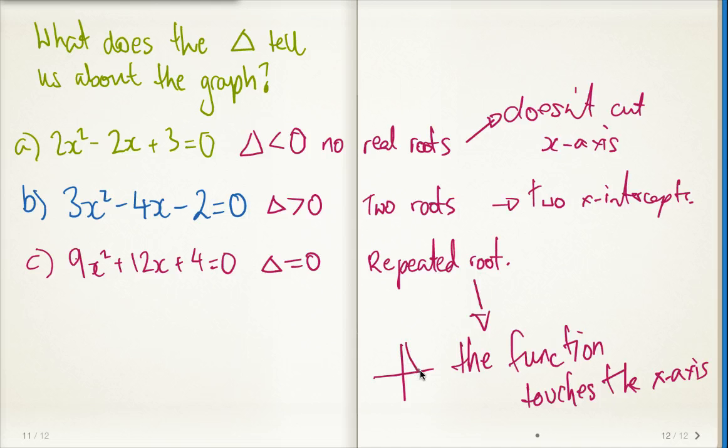Like that. 2 roots is going to look like this, or it could look like this. We've got 2 functions. And this one here doesn't cut the x-axis. So your parabola is all the way up here, or perhaps it's all the way down here. Anywhere it is, it doesn't cut that x-axis.